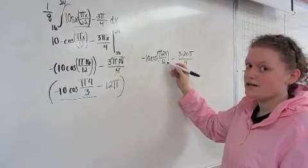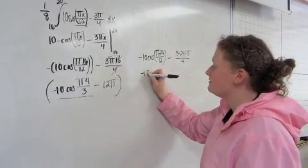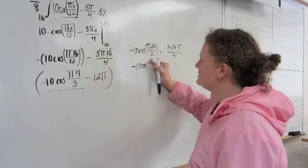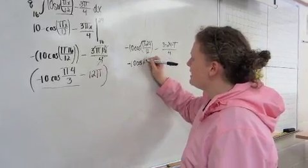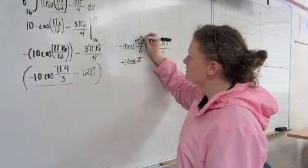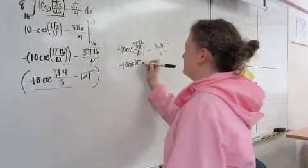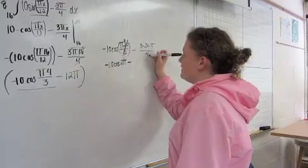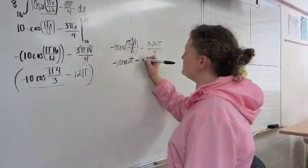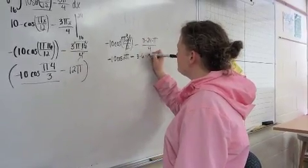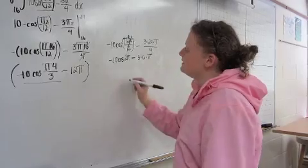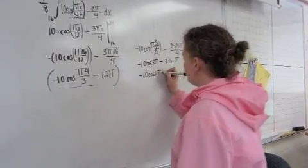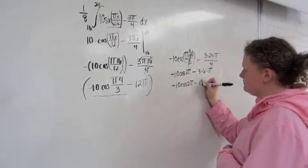Negative 10 cos of π times 24 over 12 minus 3 times 24 times π over 4. Here, the common denominator is 12. So, we can make this negative 10 cos(2π). Here, the common denominator again is 4. 4 goes into 24, 6 times. So, we have 3 times 6 times π. In the end, this becomes negative 10 cos(2π) minus 18π.